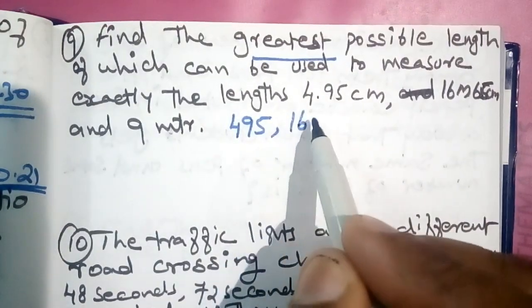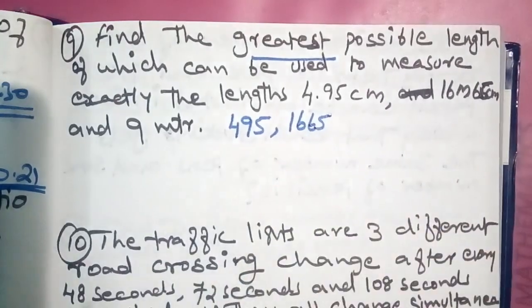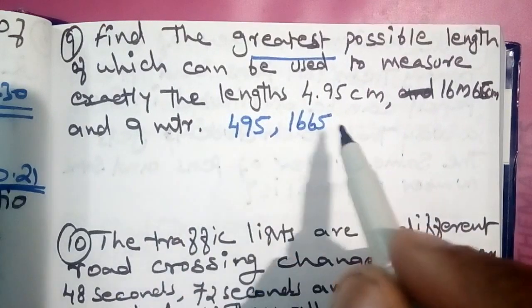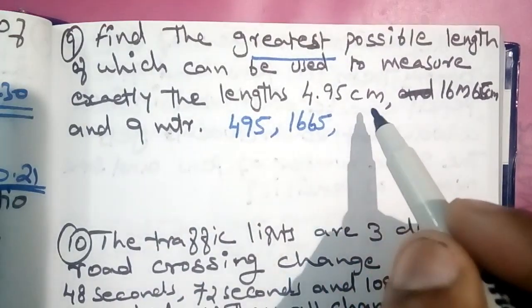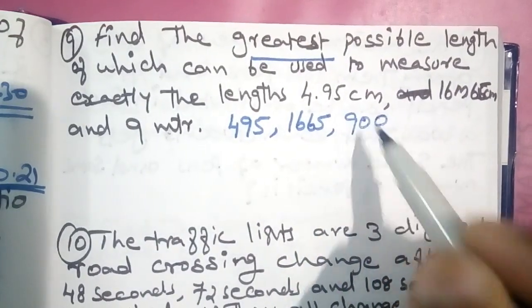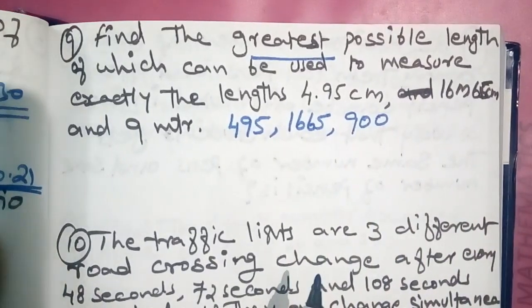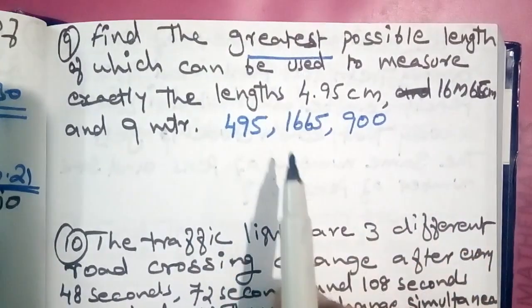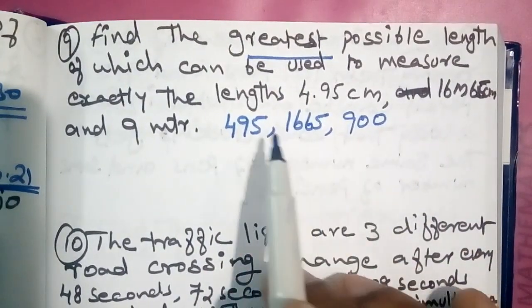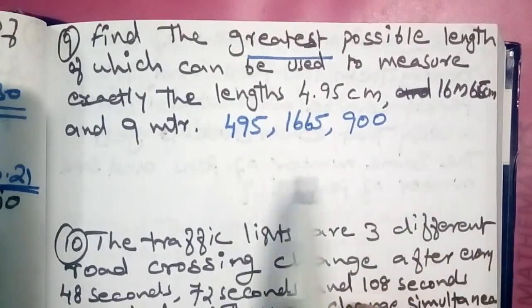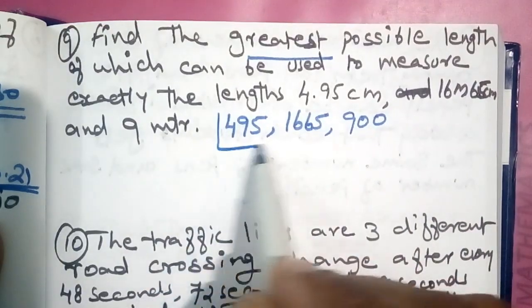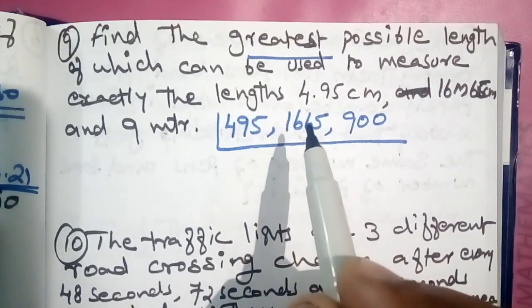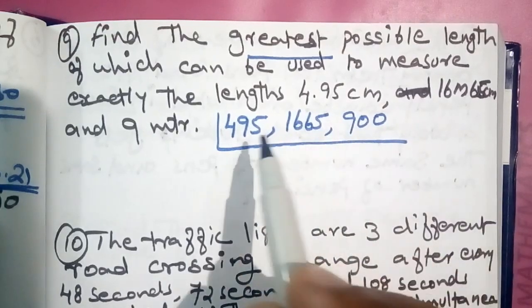This comes to 1.60 cm. So we compute A minus B, B minus C, and C minus A.